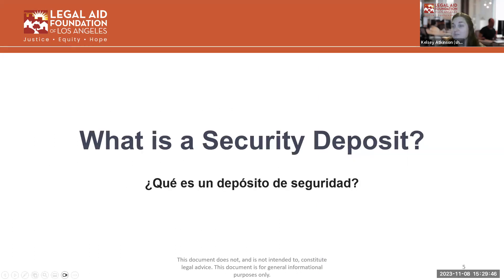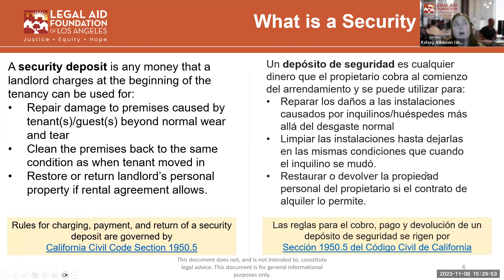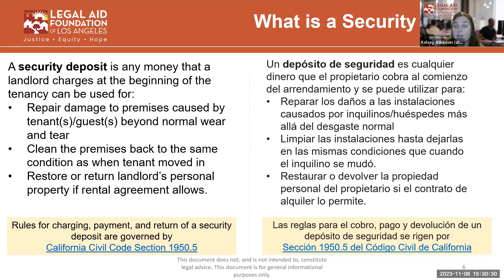For our first part of the presentation, a security deposit is any money that a landlord charges at the beginning of the tenancy, and it can be used for the following things: to repair damages to the premises caused by a tenant or a tenant's guest beyond normal wear and tear; to clean the premises back to the same condition as when a tenant moved in; and to restore or return the landlord's personal property in the unit if the rental agreement allows for that. This is not an exhaustive list — these are the main examples specifically listed by law.